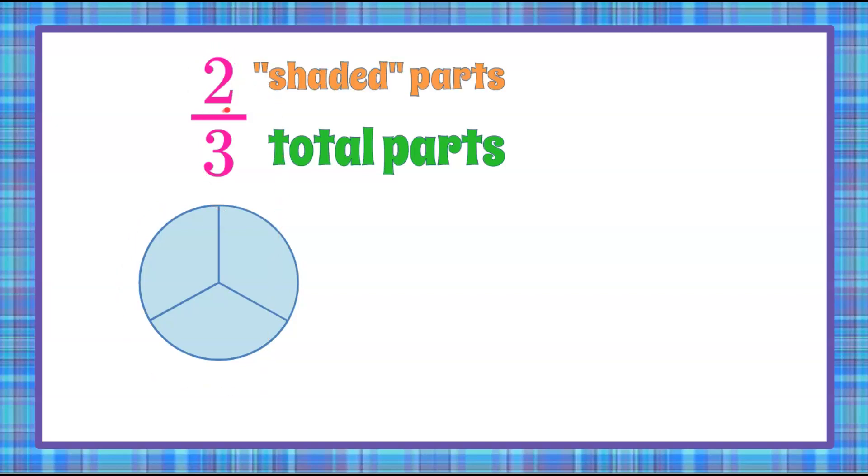And then our numerator talks about our shaded parts, or the desired amount of the whole. So when we have two-thirds, that means we're going to shade in two of those three equal parts. So this is two-thirds of our whole.